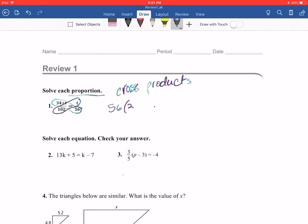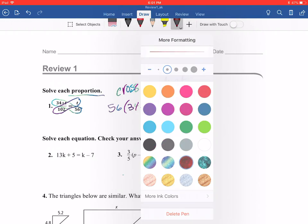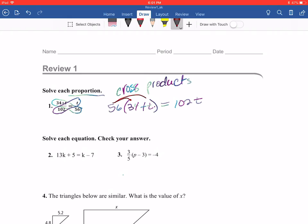So I'm going to take 56 times (34 plus T). We need to group that, that 34 plus T—those two values that are in the numerator need to be grouped. Then it's going to be 102T. Now I need to distribute. So I'm going to distribute the 56 to both terms inside my parentheses. So that's going to become 1,904 plus 56T. It's going to be equal to 102T.